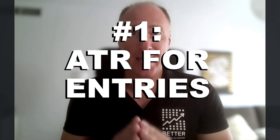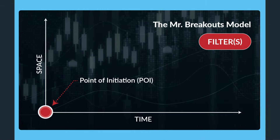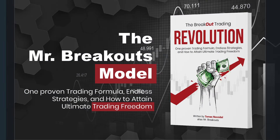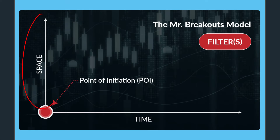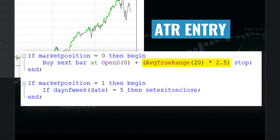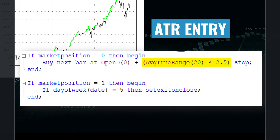Tip number one: entries. Average True Range is the very essence of my breakout trading model, which I've already presented on this channel a couple of times and which you can find more about in my book, The Breakout Trading Revolution. Basically, all you need to do is pick a point of initiation and then calculate some breakout space using Average True Range. The simplest way is to take ATR of any period and multiply it by a certain fraction to calculate where you want to enter.